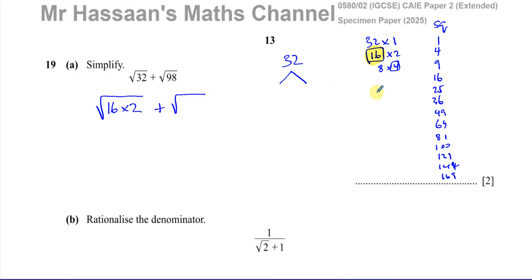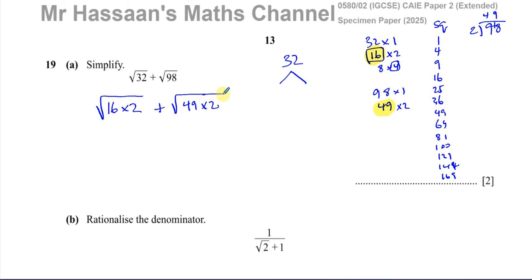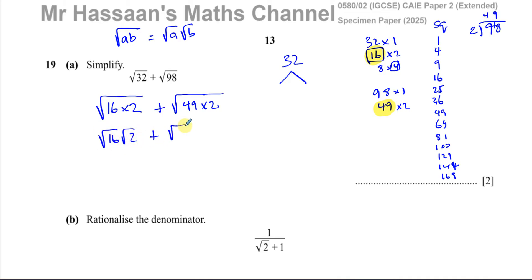For 98, I've got to think of how to split it into two numbers. I know it's divisible by 2 because it ends in an even number: 2 goes into 98 giving 49. And 49 is a square number — it's 7 squared. So 49 times 2 is the biggest square factor of 98. Always write the square number first when you split it up like this. Now we use one of the laws of surds: the square root of a product AB equals the square root of A times the square root of B. So I can write this as √16 × √2 + √49 × √2.